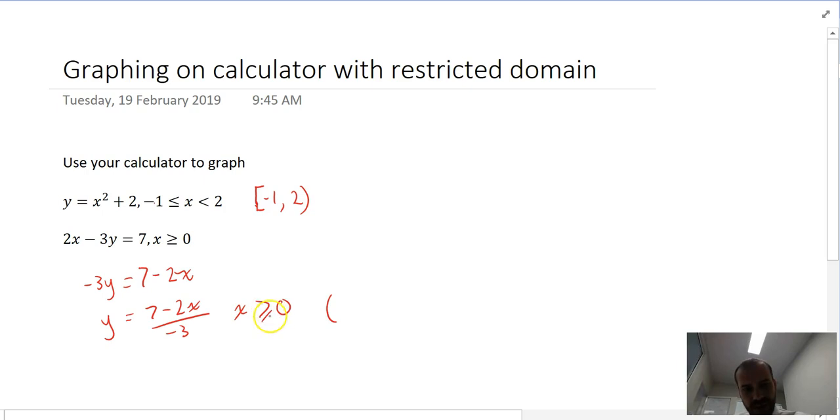So if x is greater than or equal to 0, it's including 0. So if it's including 0, it's a square bracket. And it's greater than, so it's all the way up to infinity and a curved bracket because you can't include infinity.